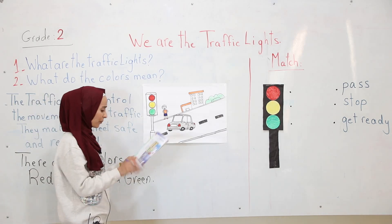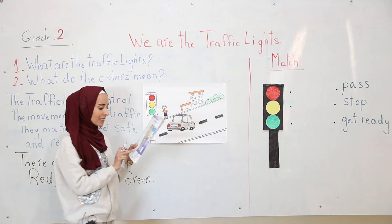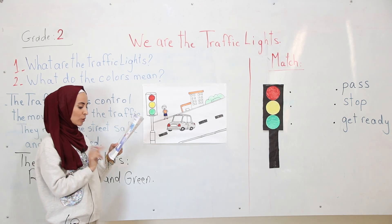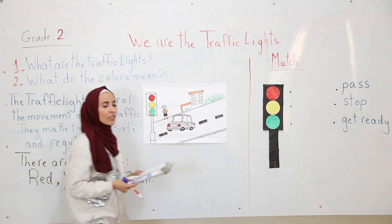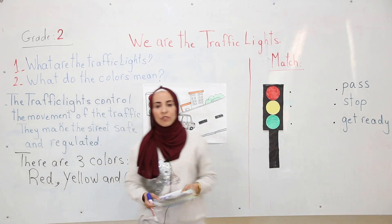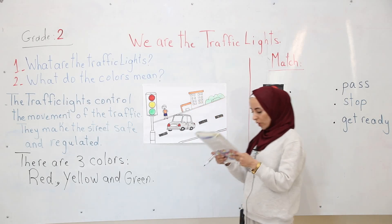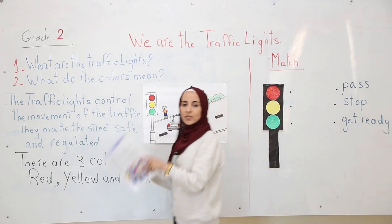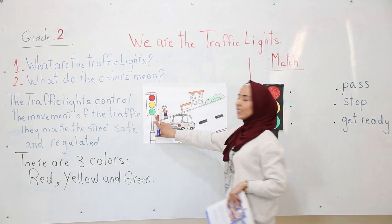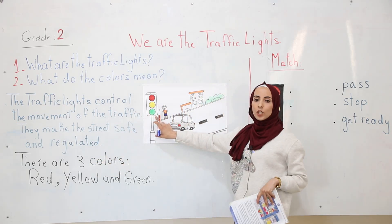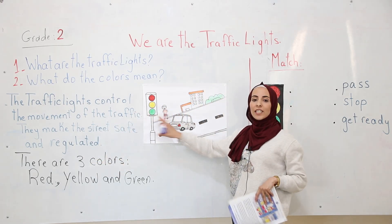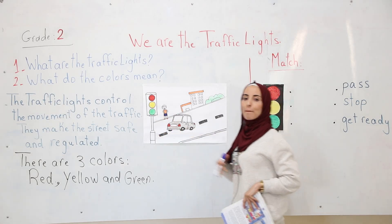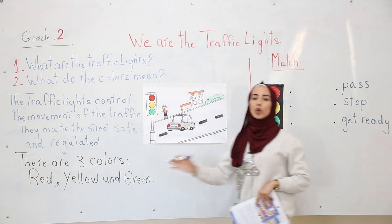Number three. When I am on, you pass right away. I am the light that is your way. So when we see this light, when this light is on, we have to pass. We could pass. This is the green light. When the green light is on, we can pass and we can go.